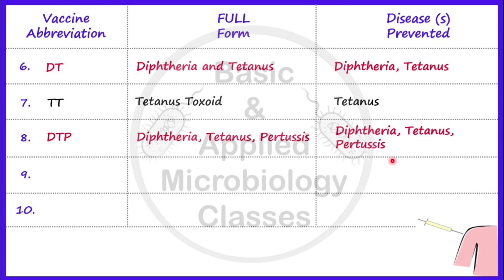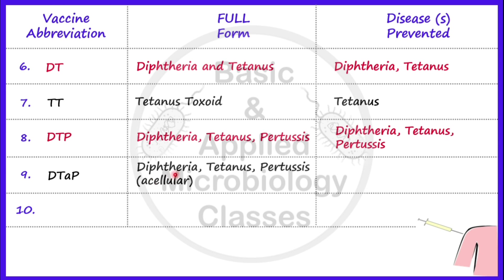Now let's take the next vaccine, that is DTaP. The full form of DTaP is Diphtheria, Tetanus, and Acellular Pertussis. Again, the diseases prevented are diphtheria, tetanus, and pertussis, as per the name.